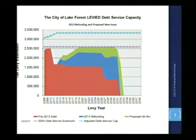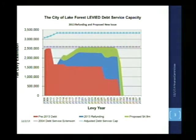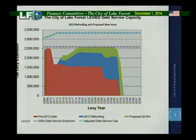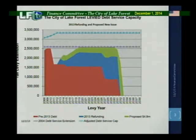The two lines: the purple line is the original 2004 debt service extension cap. When the city became home rule, the city adopted an ordinance indicating that the debt service would be capped at the debt service levy applicable for that year. Over time, due to inflation and construction cost increases, that cap had created an artificial number that wasn't reasonable anymore to continue to sustain infrastructure improvements necessary to maintain the city's infrastructure.